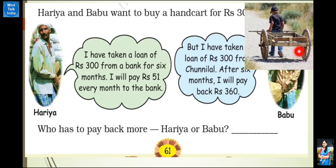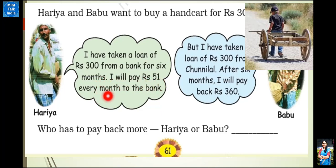हरिया और बाबु को एक हाथगाड़ी खरीदनी है जो ₹300 की आती है। वो बहुत गरीब हैं, इसलिए उन्होंने bank से ₹300 का loan लिया। Hariya says: I have taken a loan of ₹300 from a bank for 6 months. I will pay ₹51 every month to the bank.